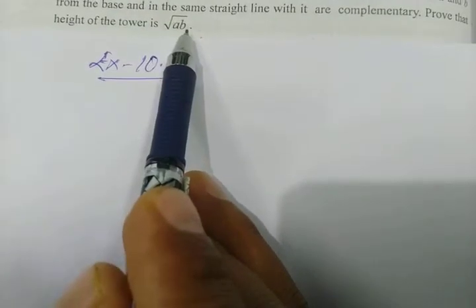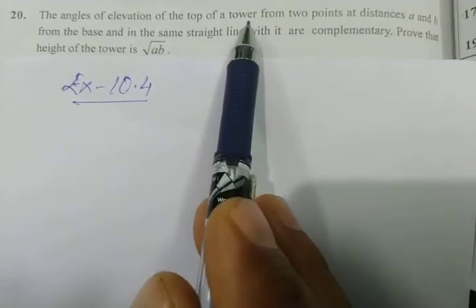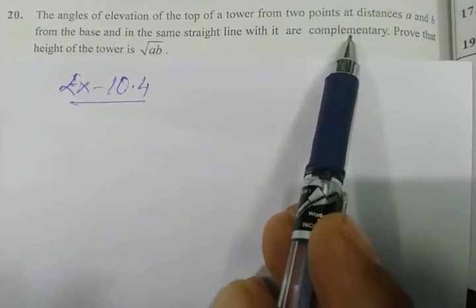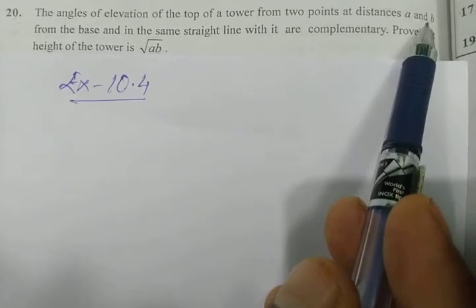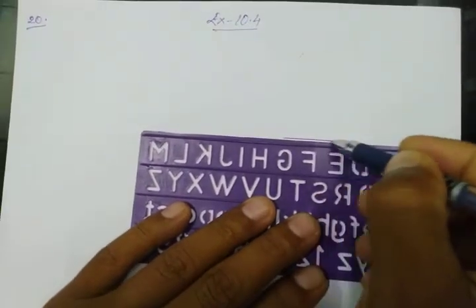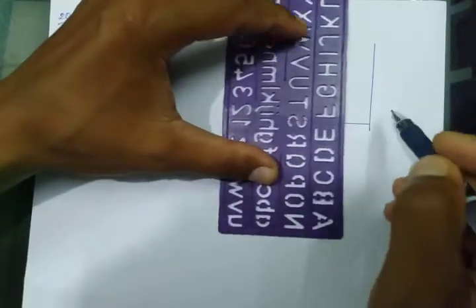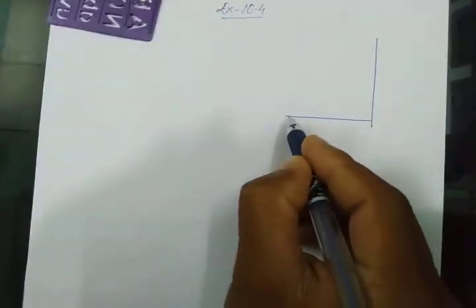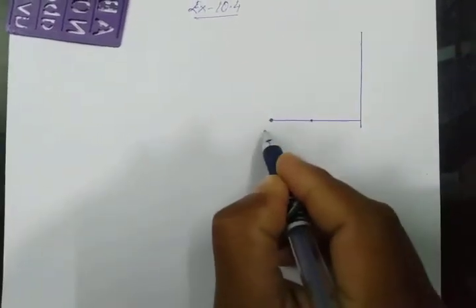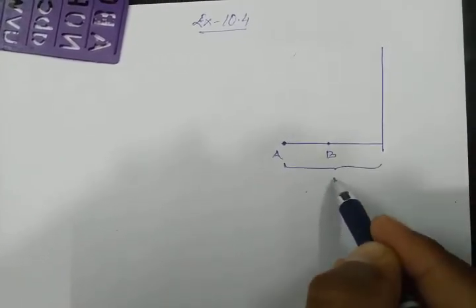So the angles of elevation from two points, on observing the top of the tower, are complementary, and the two points are at distances of small letter a and small letter b. Let us try to draw out the figure. Let's say this is the base on which the tower is standing, this is the tower, and there are two points.